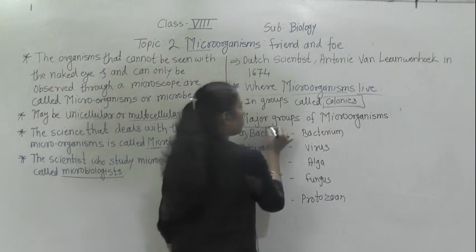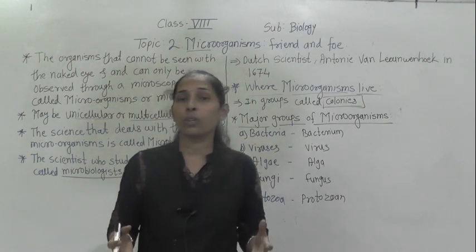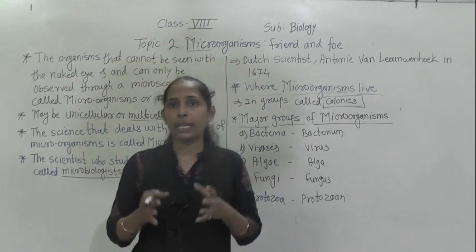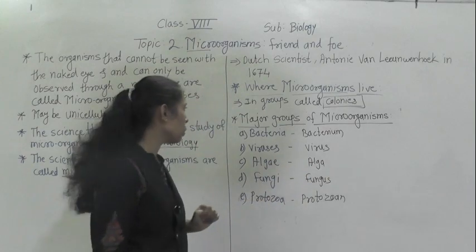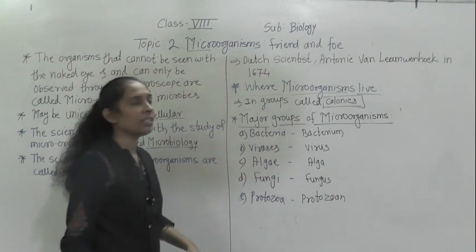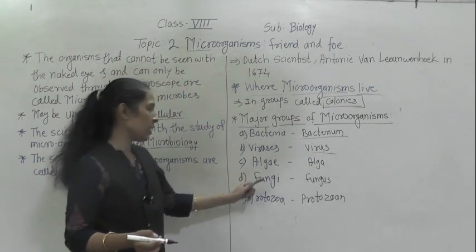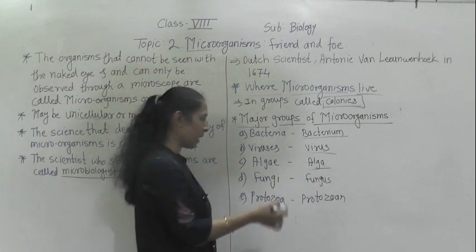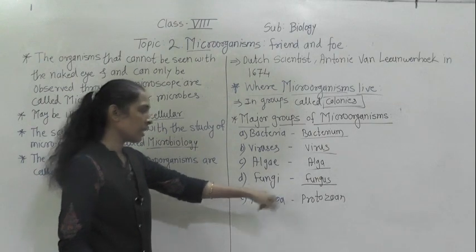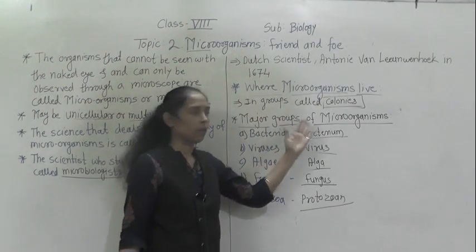Now let's discuss the major groups of microorganisms. There are numerous microorganisms present on the earth, but all these microorganisms are broadly classified into five major groups. The first is bacteria — singular: bacterium. Next are viruses — singular: virus. Third is algae — singular: alga. Fourth is fungi — singular: fungus. And the fifth is protozoa — singular: protozoan. These are the five major groups of microorganisms.